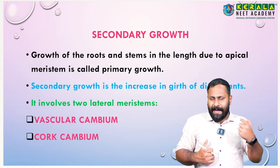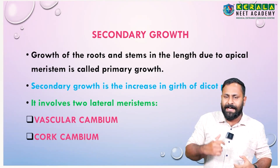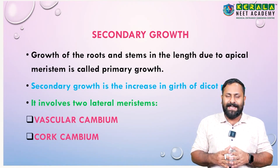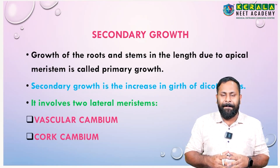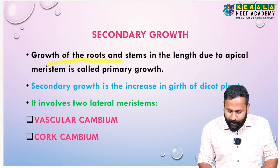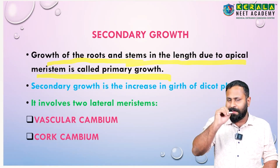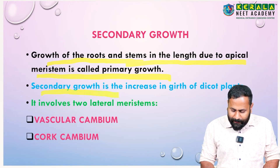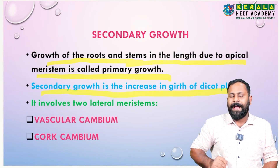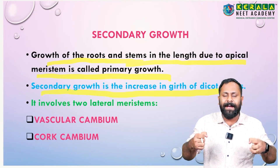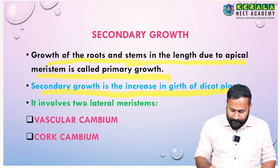Apart from primary growth, dicot plants — dicot stem, dicot root — and gymnosperms show another type of growth called secondary growth. Secondary growth is the increase in girth or diameter of dicot plants, and it is due to lateral meristem, also called secondary meristem.